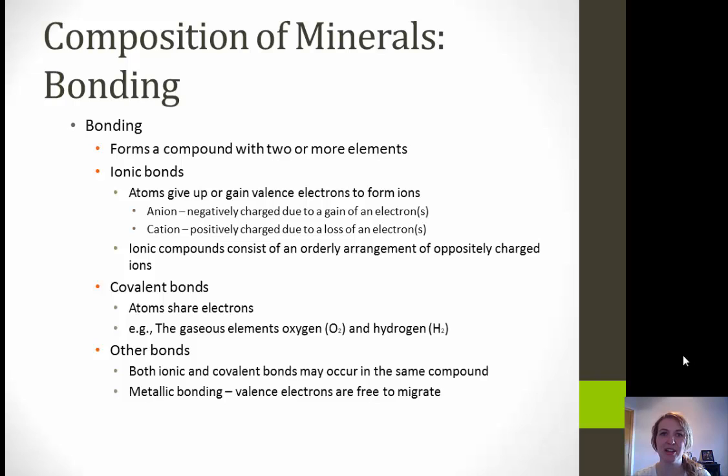The next type of bonding is covalent, where atoms share electrons — for example, the gaseous elements oxygen (O2) and hydrogen (H2). We also have other bonds where both ionic and covalent bonds may occur in the exact same compound. We're also going to get metallic bonding, where valence electrons are free to migrate — metallic bonding is pretty typical of metallic minerals.